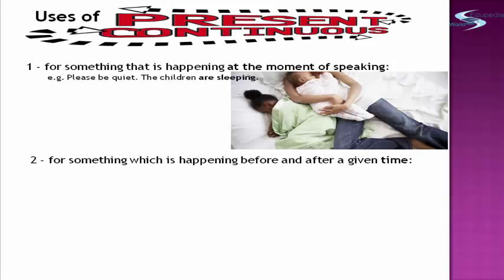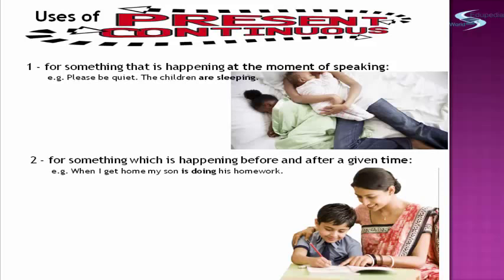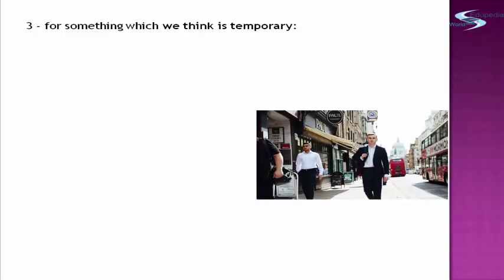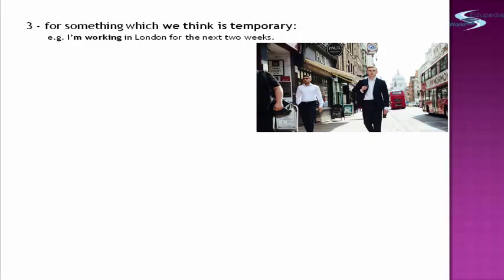The second usage for present continuous: it is used for something which is happening before and after a given time. Example: 'When I get home, my son is doing his homework.' 'Is doing' is the present continuous. The third usage is that it is used for something which we think is temporary. Example: 'I'm working in London for the next two weeks.' 'I'm working' is temporary because of the phrase 'next two weeks' — maybe after that, he will be going home.